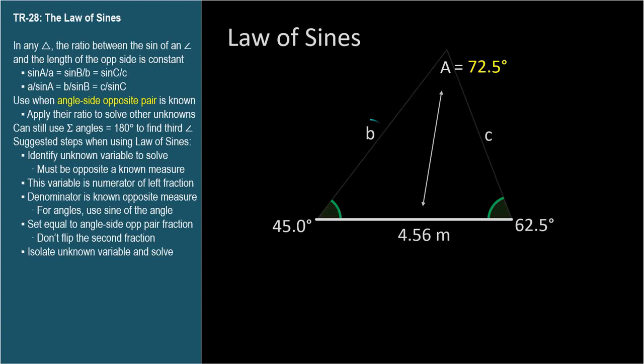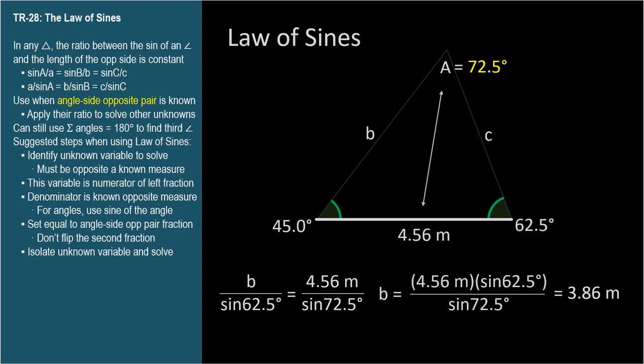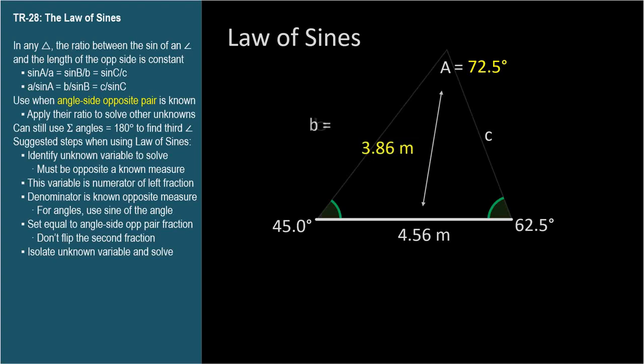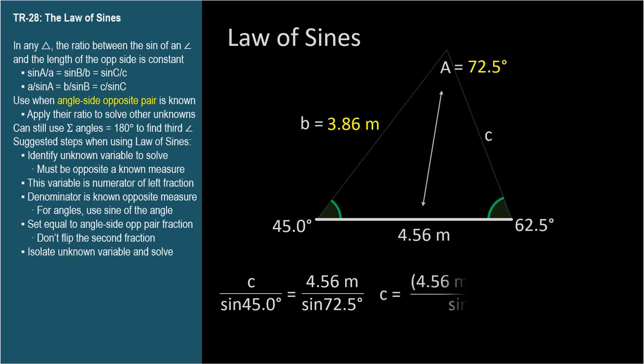We'll start with side B. B over sine 62.5 degrees equals 4.56 meters divided by sine 72.5 degrees. Solving for side B, we get 3.86 meters. Now let's find C. C over sine 45.0 degrees equals 4.56 meters over sine 72.5 degrees. Solving for side C, we get 3.08 meters. And before you know it, we've solved the triangle.